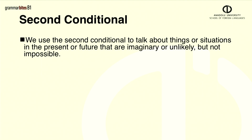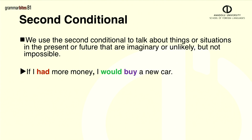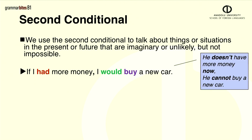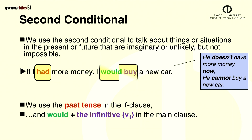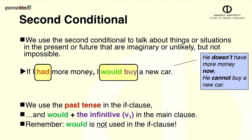Let's have a look at the structure of our example sentence. If I had more money, I would buy a new car. We know he doesn't have more money now, and he can't buy a new car now. How do we make this sentence? Well, we use past tense in the if clause, and we use would plus the infinitive, or verb one, in the main clause. Remember, don't use would in the if clause.